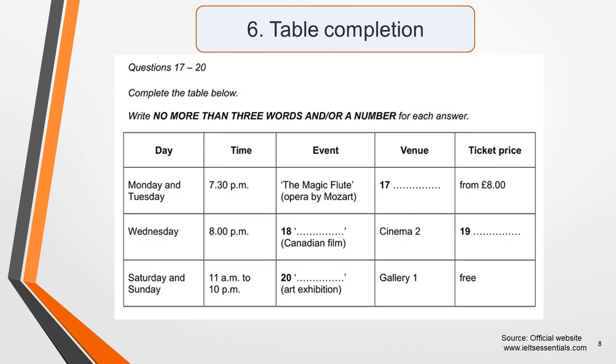Table completion questions also require you to fill in missing information. The table will be made up of columns and rows containing information. Tables generally categorise information. That is, they group pieces of information that are related in some way or share the same features.